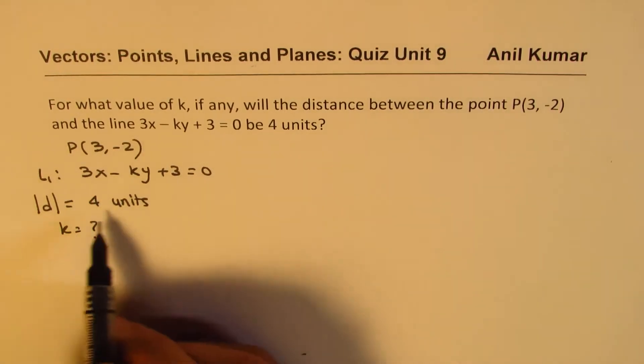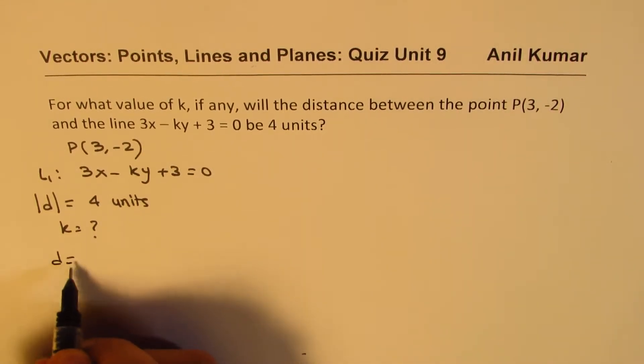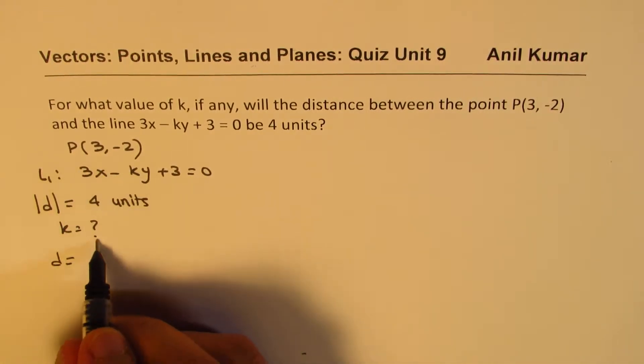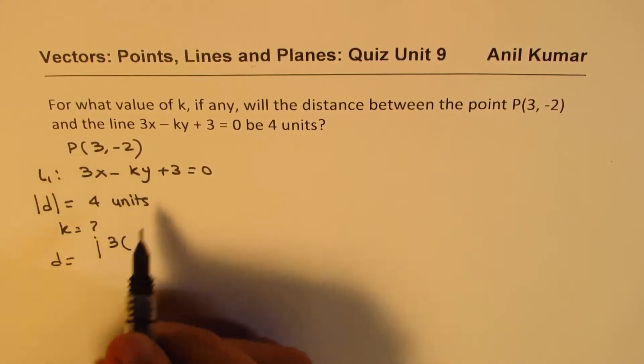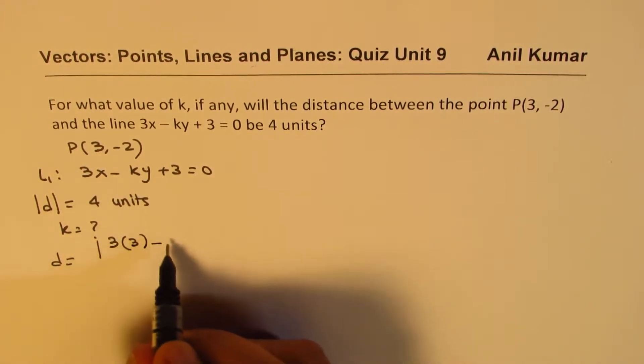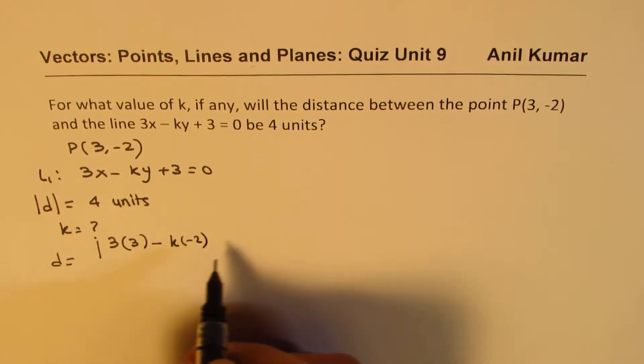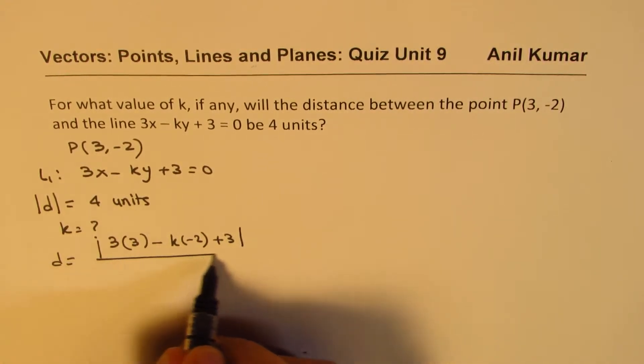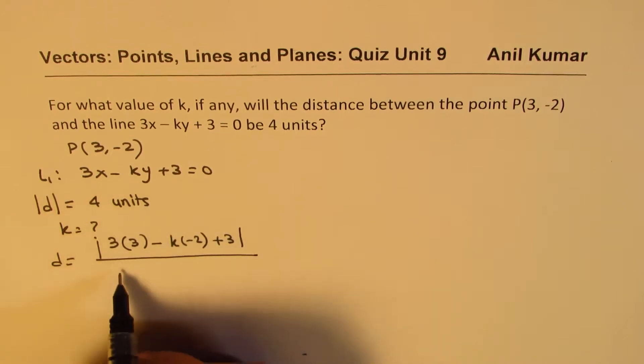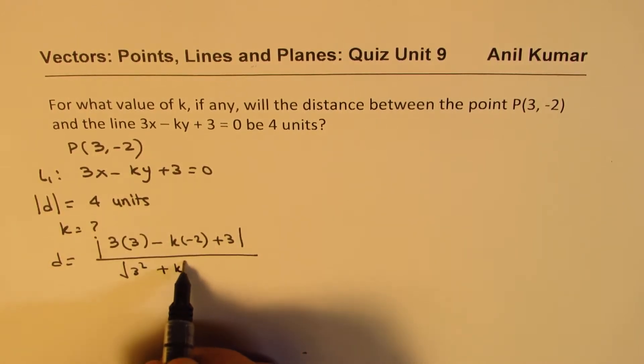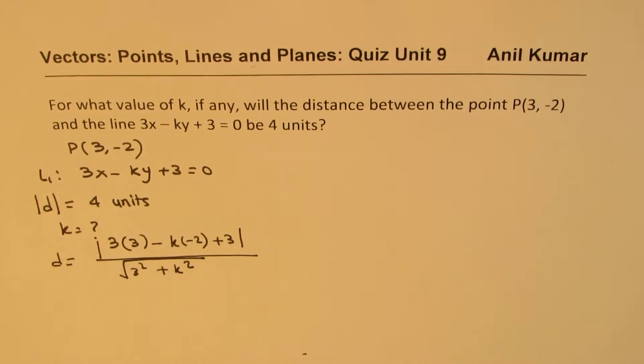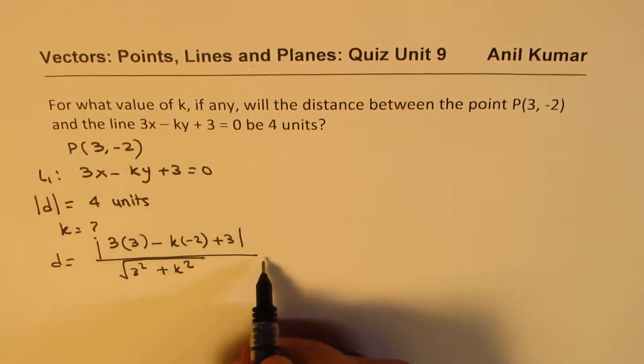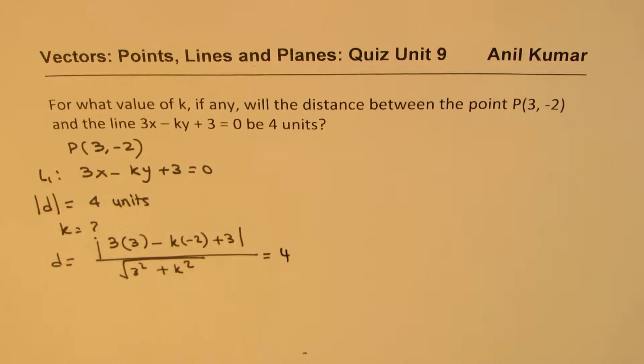Now, in a given situation, the relation is distance is basically equal to the absolute value of 3 times 3 minus k times -2 plus 3 over the normal, which is √(3² + k²). That is the relation. And we are given this distance as equal to 4 units. So that is the relation which we are trying to figure out.